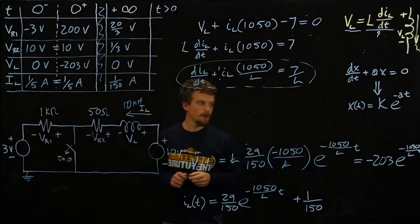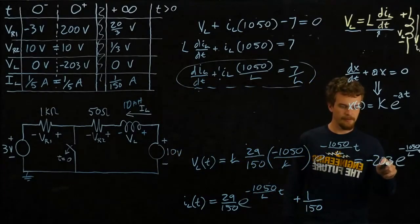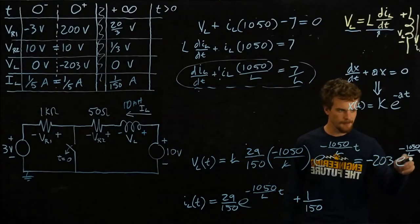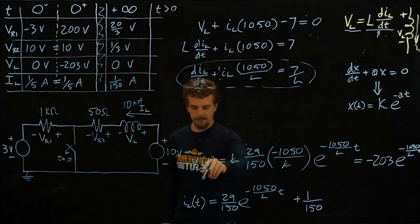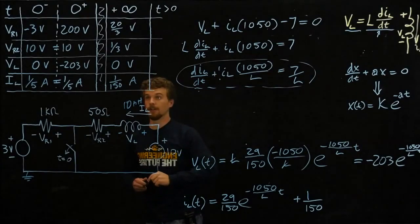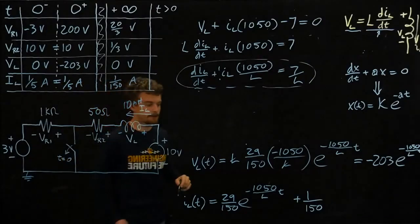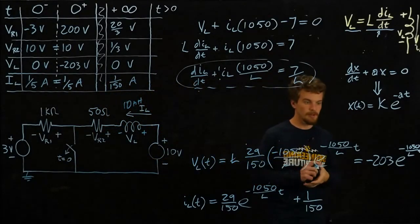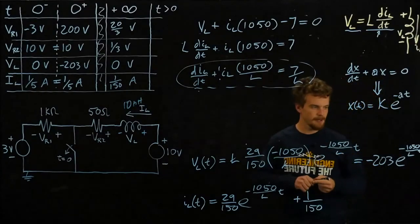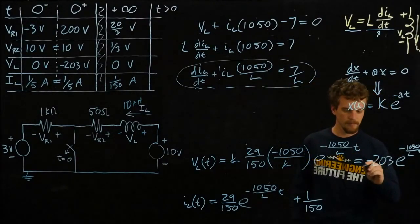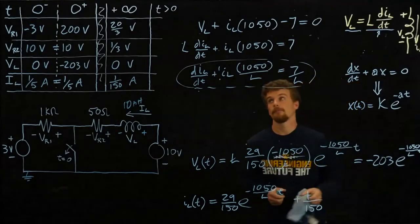Okay, so also interesting, we get this negative 203 at t equals zero. This term goes to one, that tells us that VL at t equals zero should equal negative 203. And if we come up here to our table, that's what we got using some other reasoning. So that's interesting. So now we have a time expression for VL.